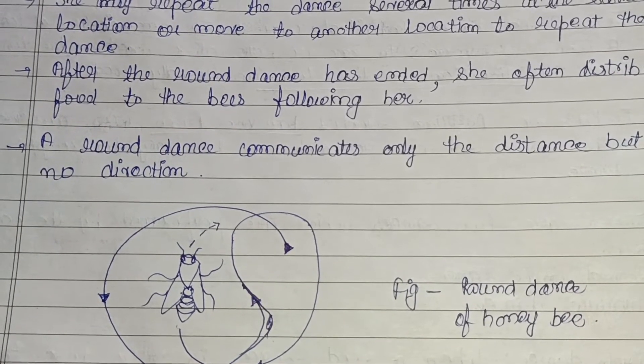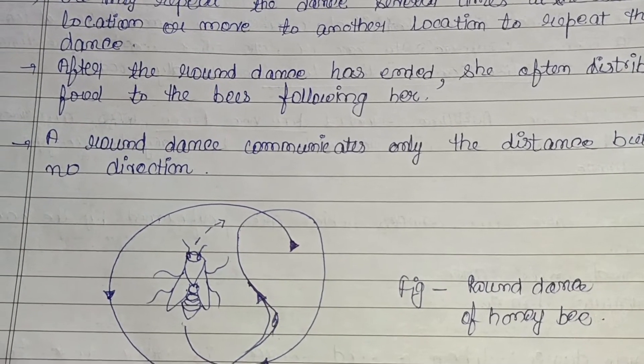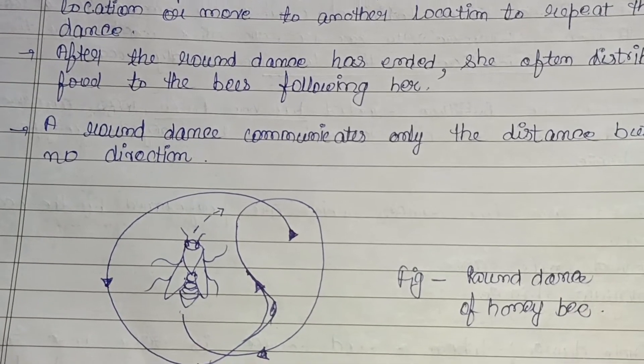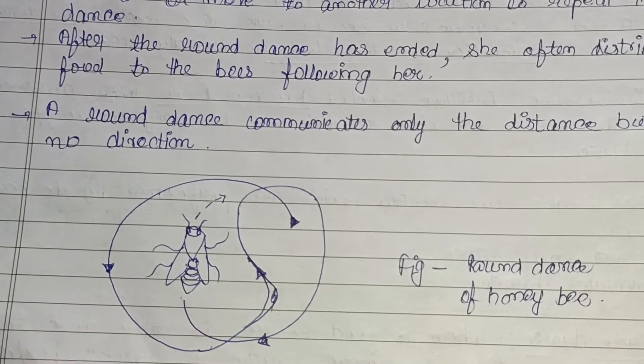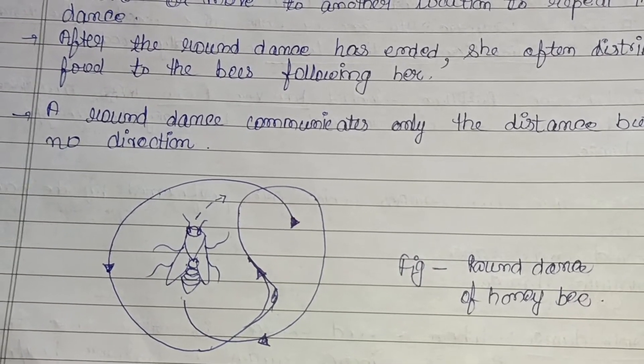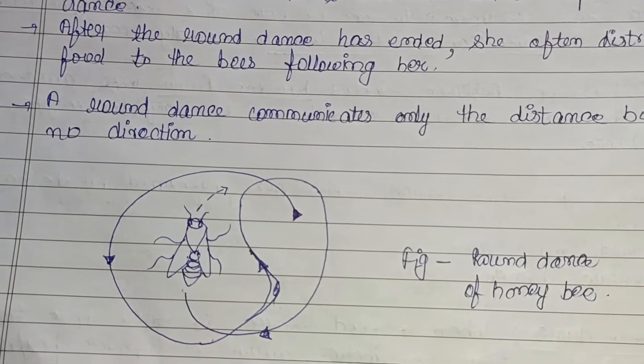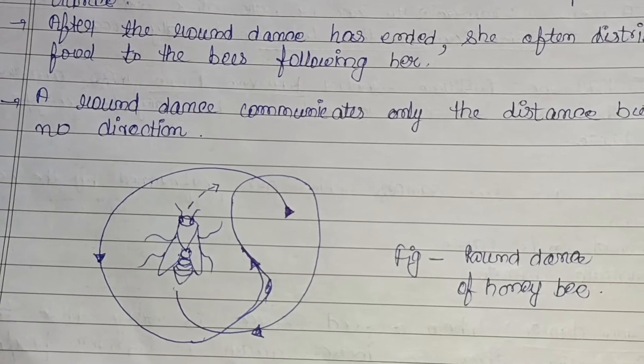This is a diagram representing the round dance or circle dance of the honeybee.